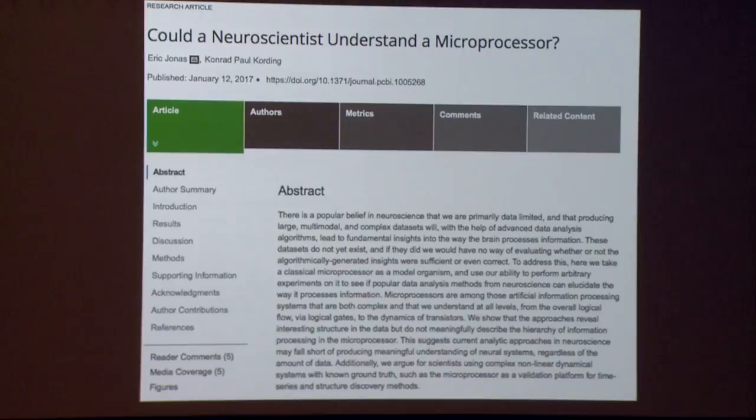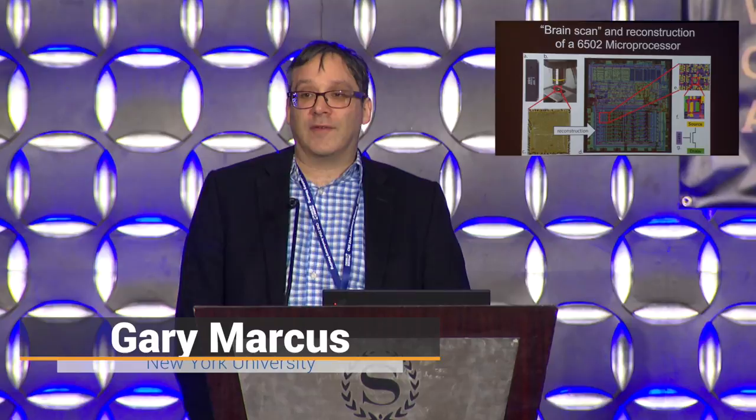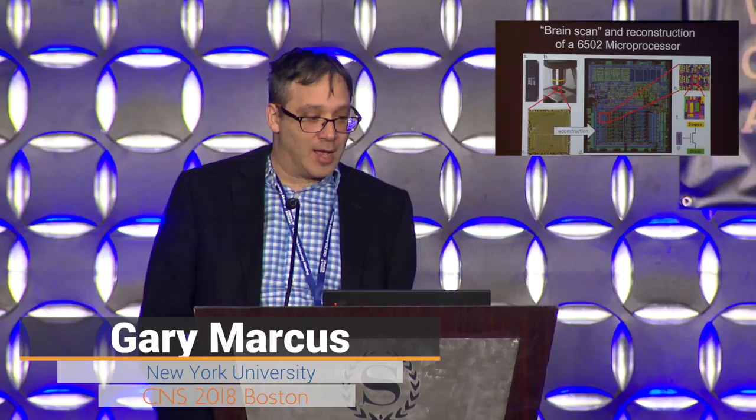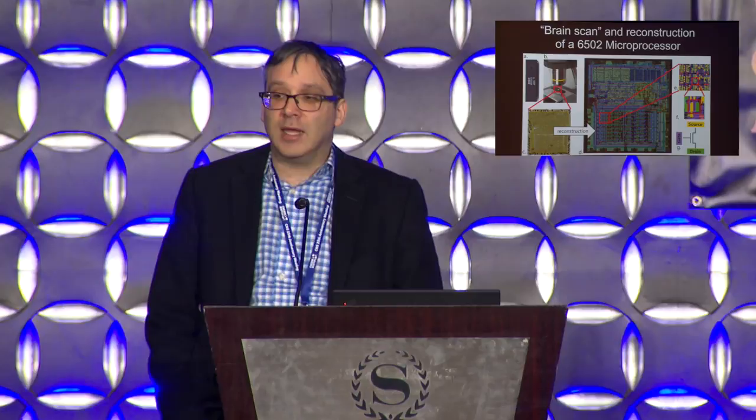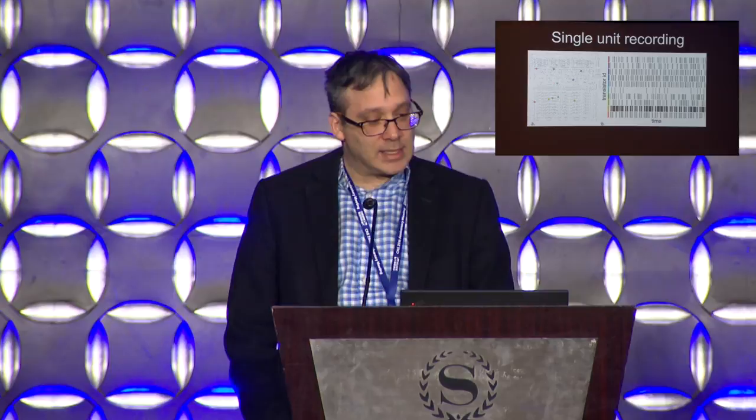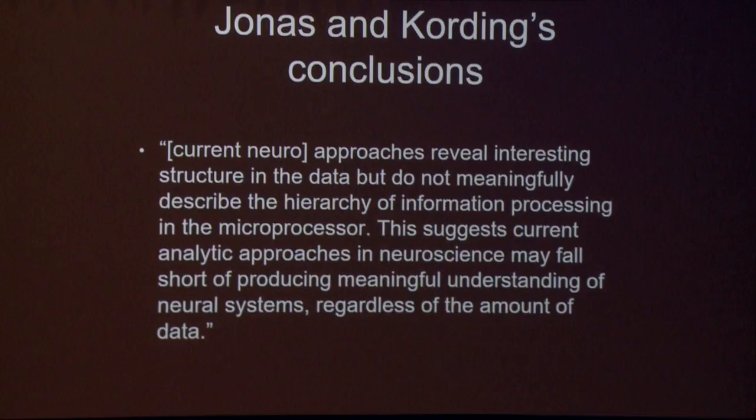What they tried to do was to reconstruct the way that a 6502 microprocessor worked — that's the one you'd find in Apple II or the Commodore 64. They had a reconstruction of this, and then they let loose all of the techniques of modern neuroscience: lesion analysis, single unit recording, and dimensionality reduction. The question was, could you figure out how a 6502 works by using all these techniques?